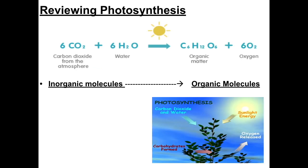Speaking of photosynthesis, to review: photosynthesis is the process by which plants use carbon dioxide and water and the power of sunlight to create glucose, C6H12O6, and oxygen as a byproduct. Photosynthesis is an extremely important process for life on this planet. It is the beginning of most food chains, as we saw in the last unit, and it is also an important component of the carbon cycle, recycling carbon throughout the environment.